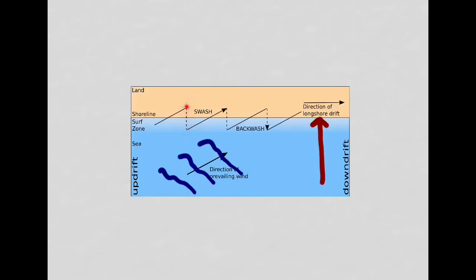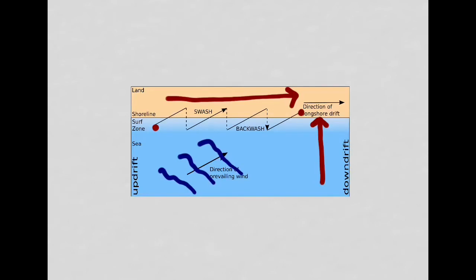Sediment moves back at a right angle perpendicular to the coastline via the backwash. So sediment is pushed up the beach at an angle and brought back down in a straight line — repeatedly. Over time, sediment that might have started at one point will end up further along the coast through this process of longshore drift, which shifts sediments down the coastline.